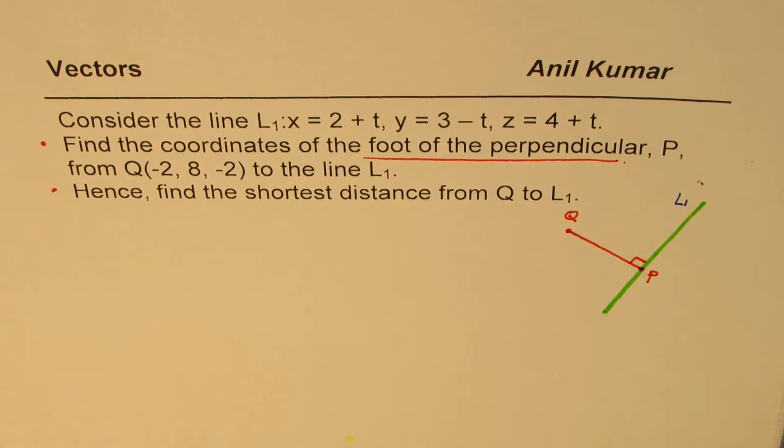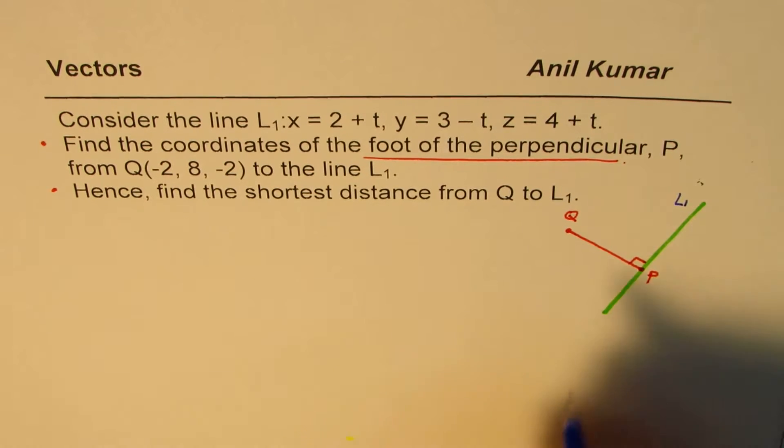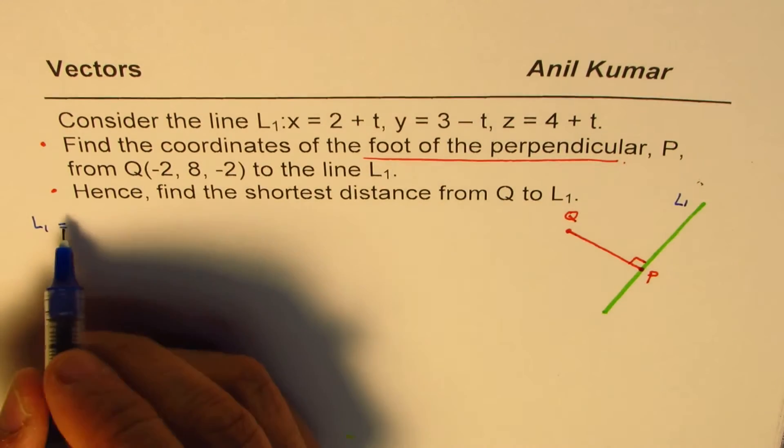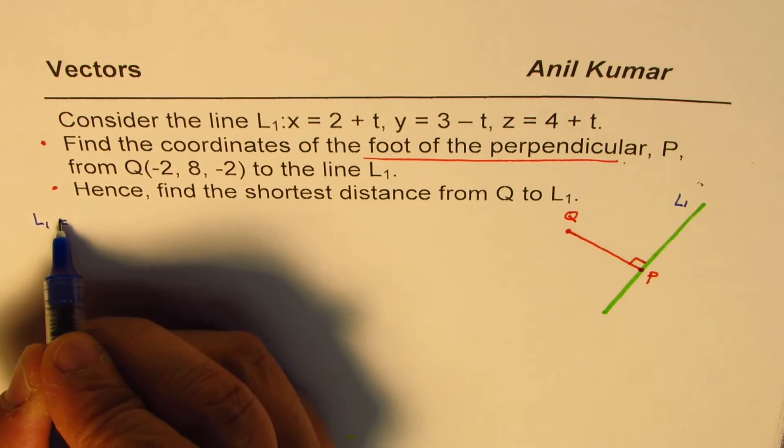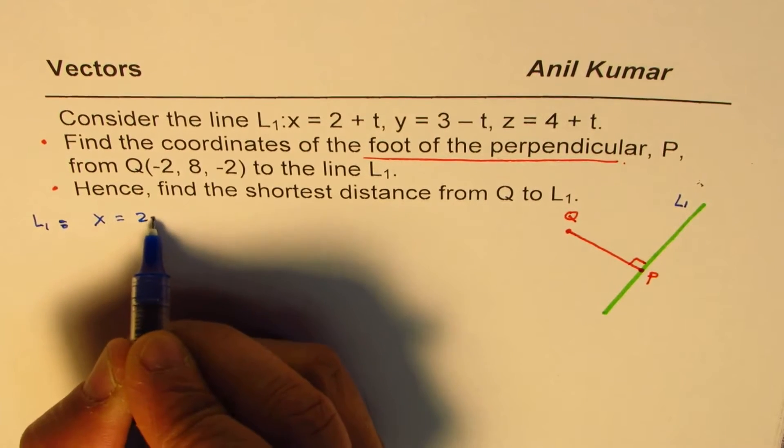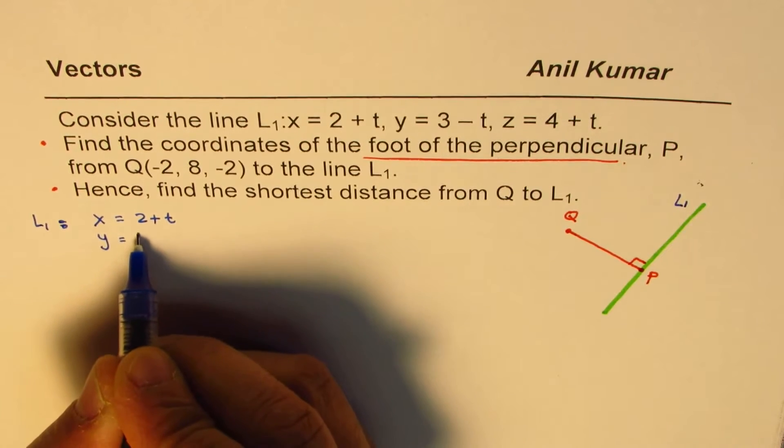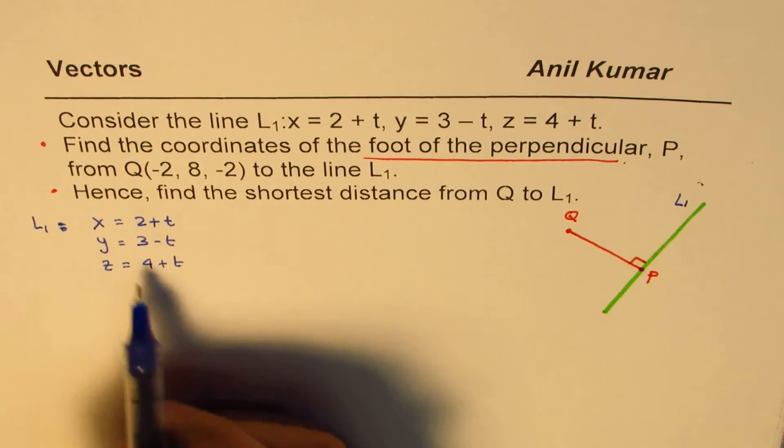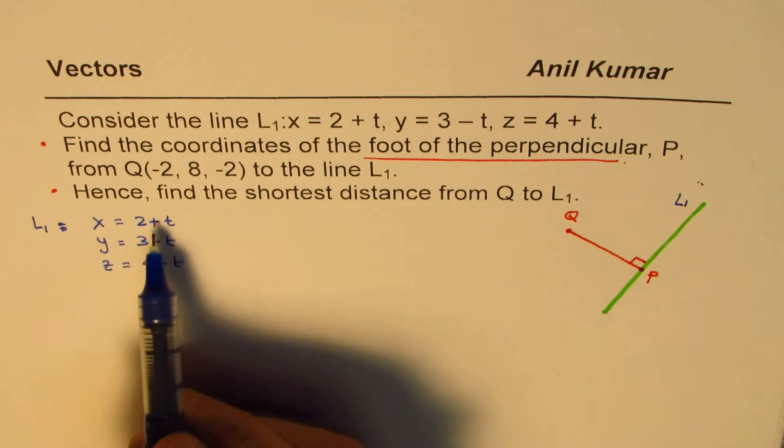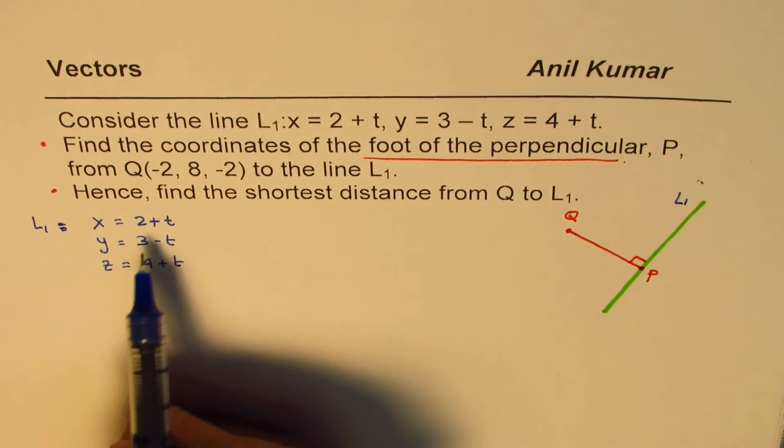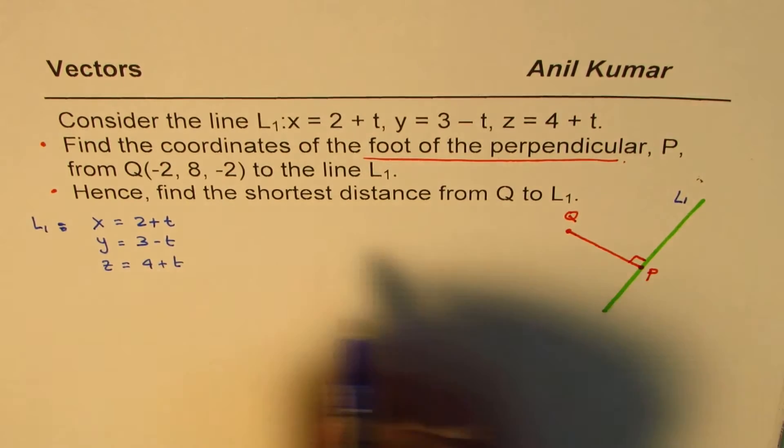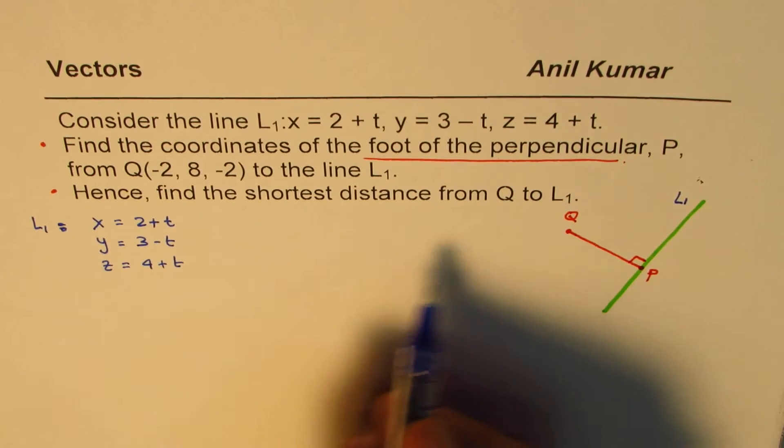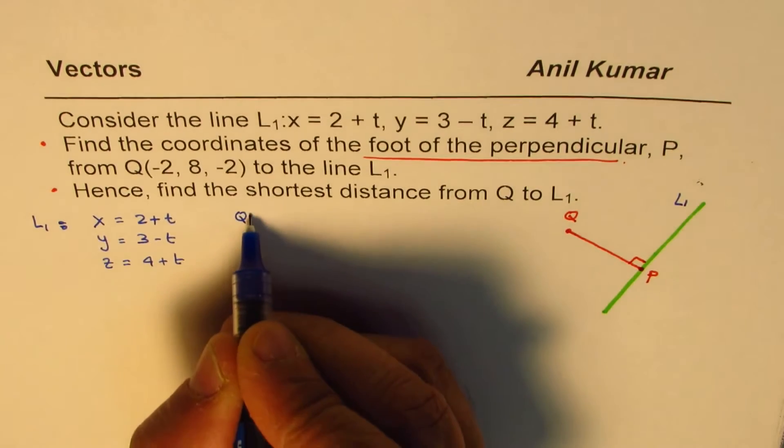So what we are given here is the line L1, and it is given in the parametric form: x equals 2 plus t, y equals 3 minus t, and z equals 4 plus t. So that basically means that any general point on this can be written in this form. So we can say, let P be a point which is like this, and we'll find what t is.